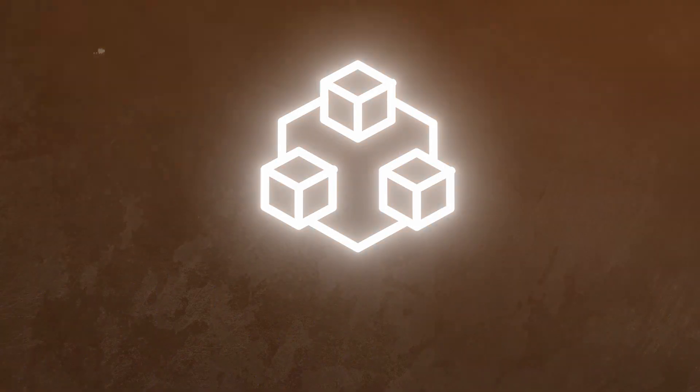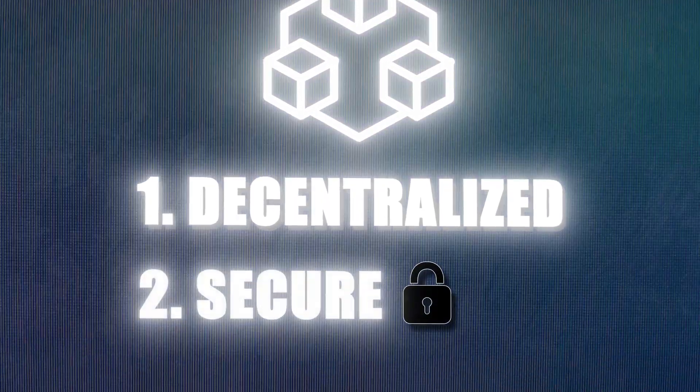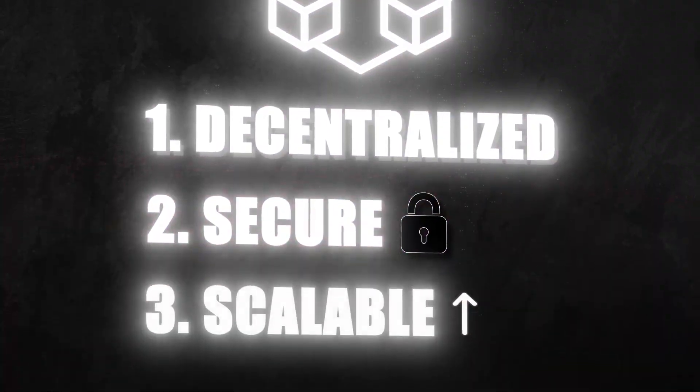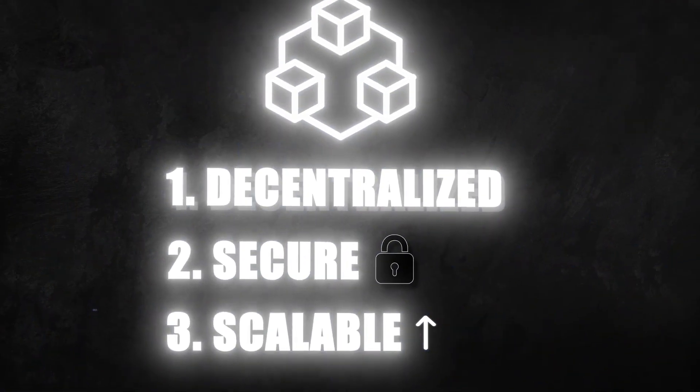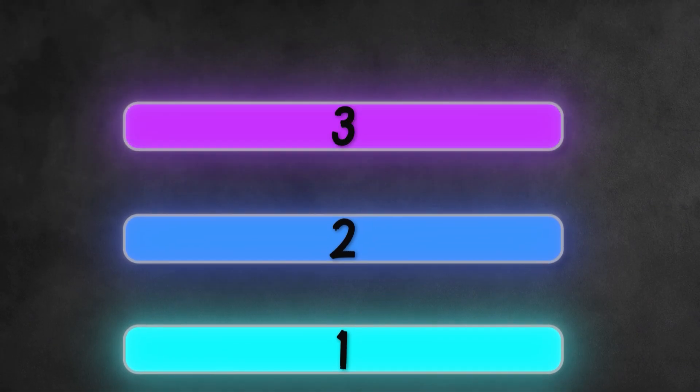What is a layer? Blockchain must be decentralized, secure, and scalable. These are the main points. There are three types of blockchain: Layer 1, 2, and 3.